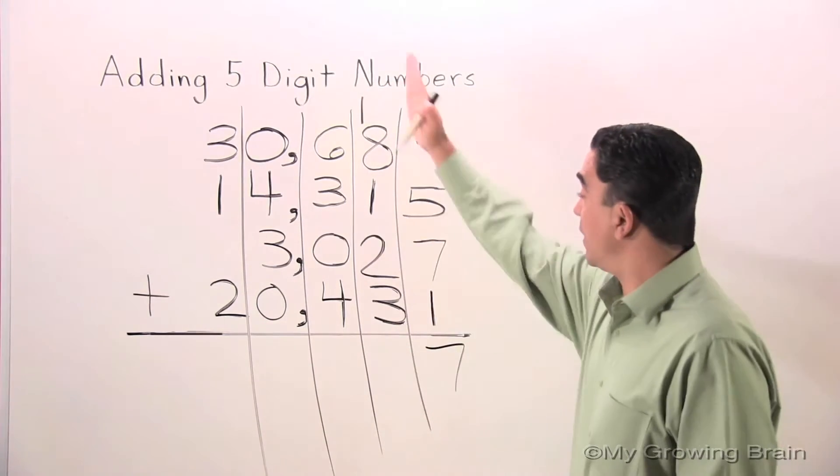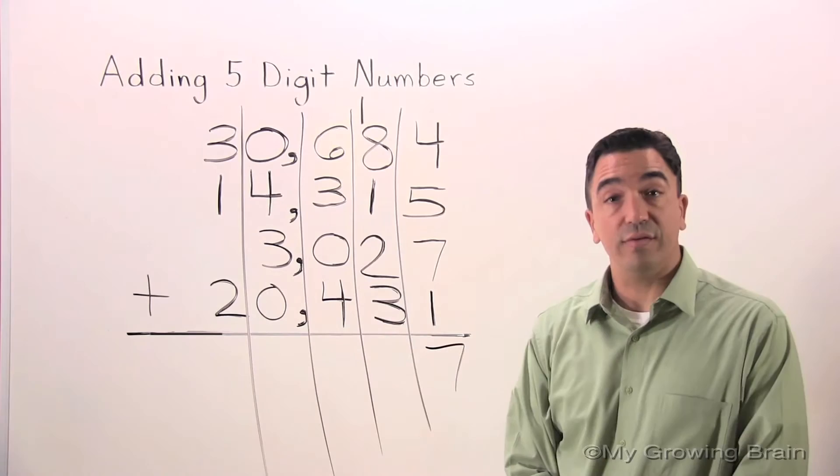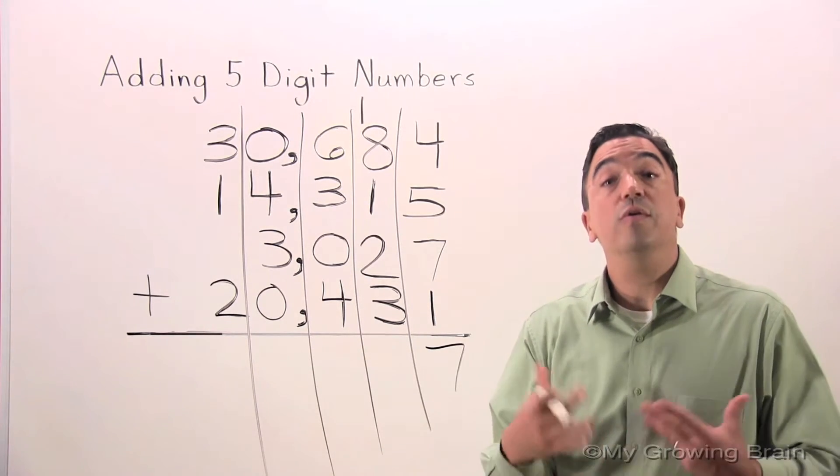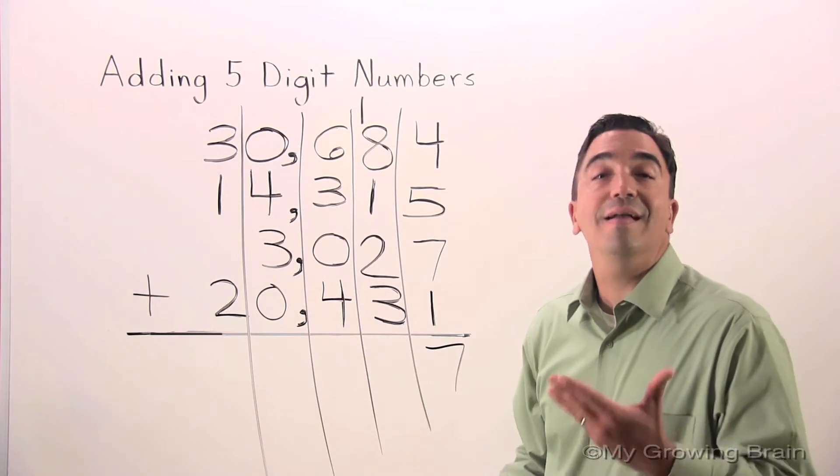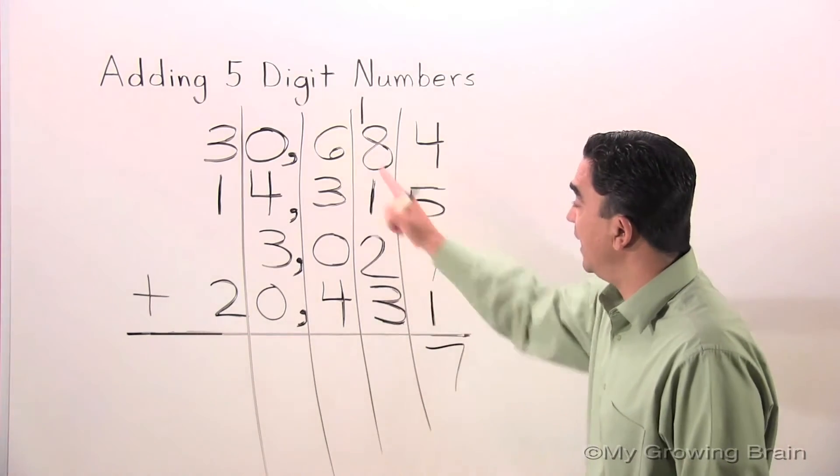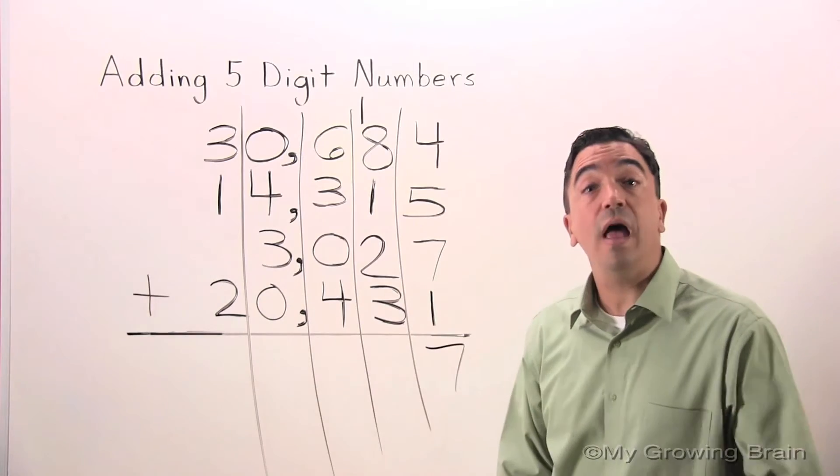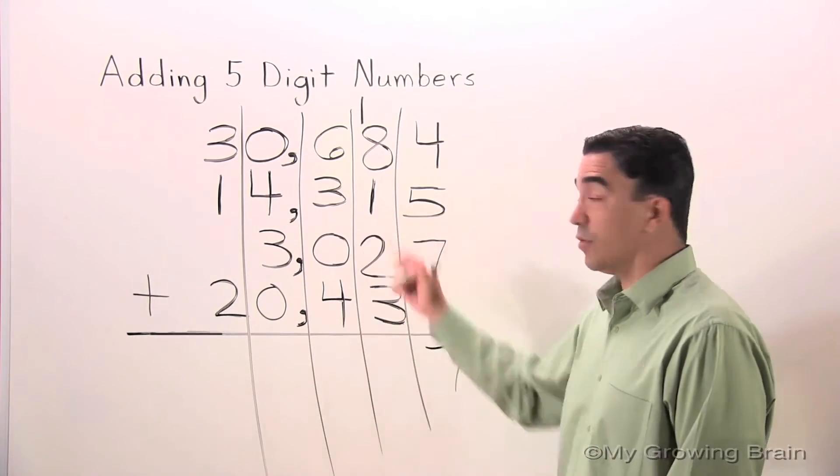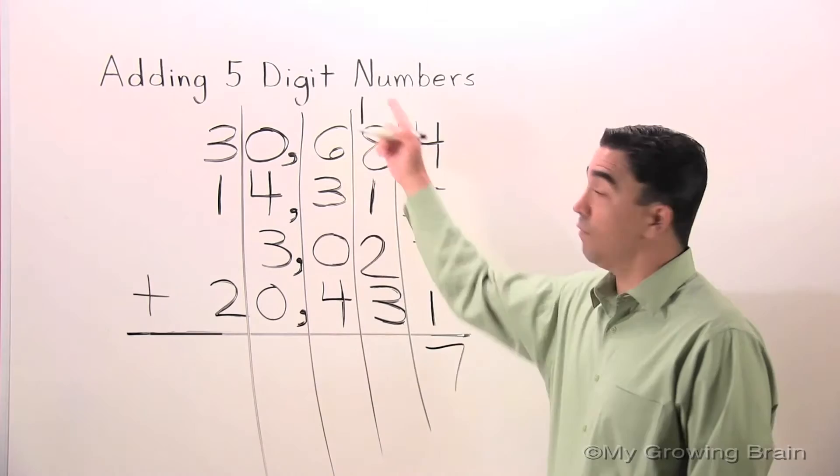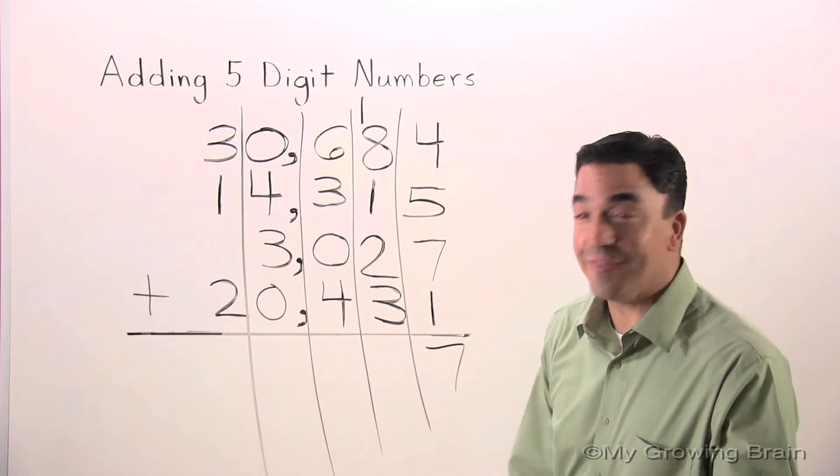Now, we're in the tens place. Once again, I'm going to group them in tens. Eight plus two is ten. Ten plus three? Thirteen. Thirteen plus one? Fourteen. Fourteen plus one? Fifteen.